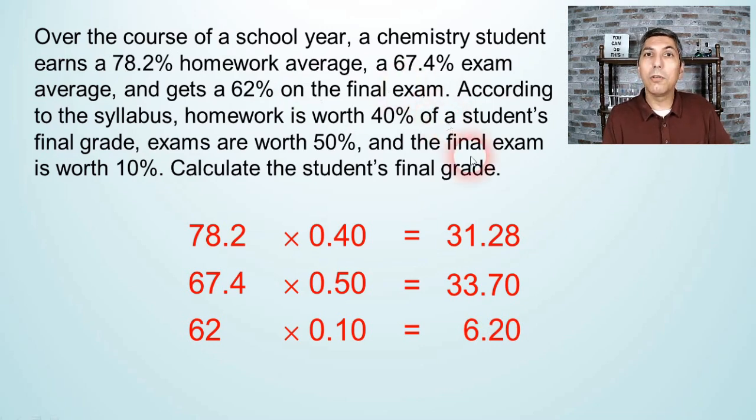What we do to find the overall average for this student is we add those three products together. So when you add them up, we find that the student's final grade is a 71.18. That's how you calculate a weighted average as opposed to just adding up values and dividing by a number.